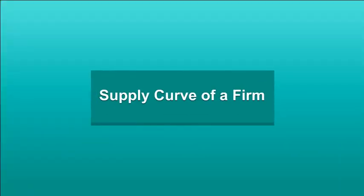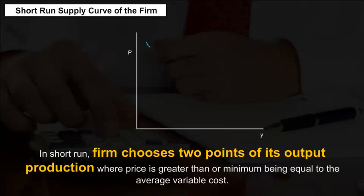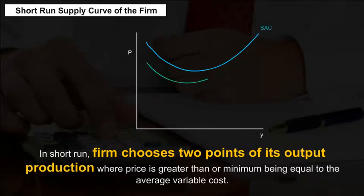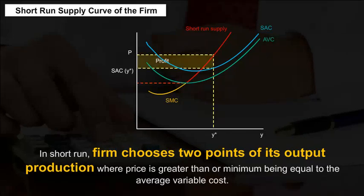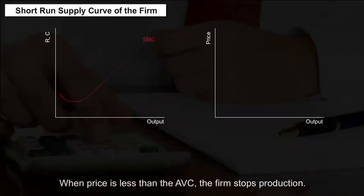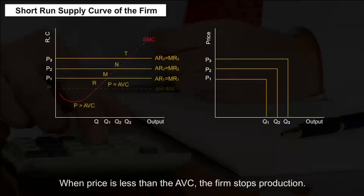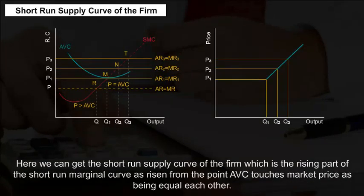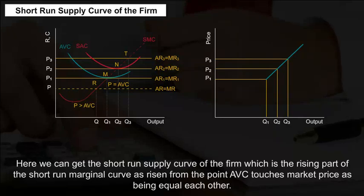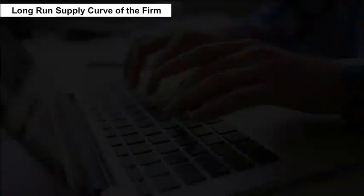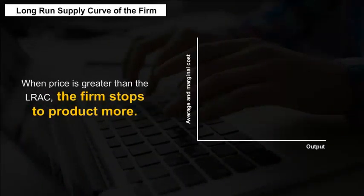Short-Run Supply Curve of the Firm. In the short run, the firm chooses output production where price is greater than or at minimum equal to the average variable cost. When price is less than the AVC, the firm stops production. The short-run supply curve of the firm is the rising part of the short-run marginal cost curve, from the point where AVC touches the market price as being equal.